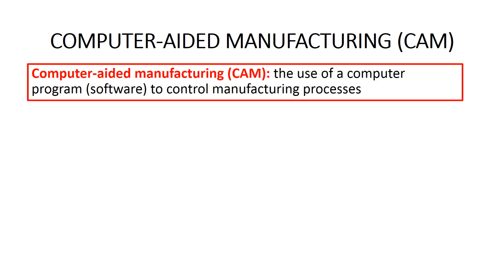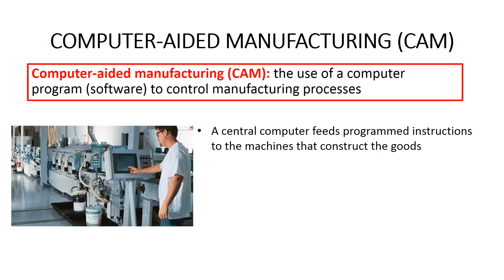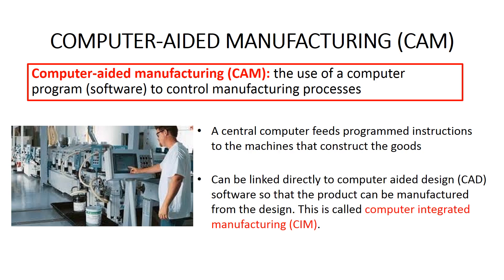Computer-aided manufacturing, or CAM, refers to the use of a computer program — that is, software — to control manufacturing processes. Find this term in your vocabulary sheets and write in the definition. In computer-aided manufacturing, a central computer feeds programmed instructions to the machines that construct the goods. CAM software can be directly linked to CAD software so that the product can be manufactured directly from the design. Where CAD and CAM are integrated, this technology is called Computer Integrated Manufacturing, or CIM.